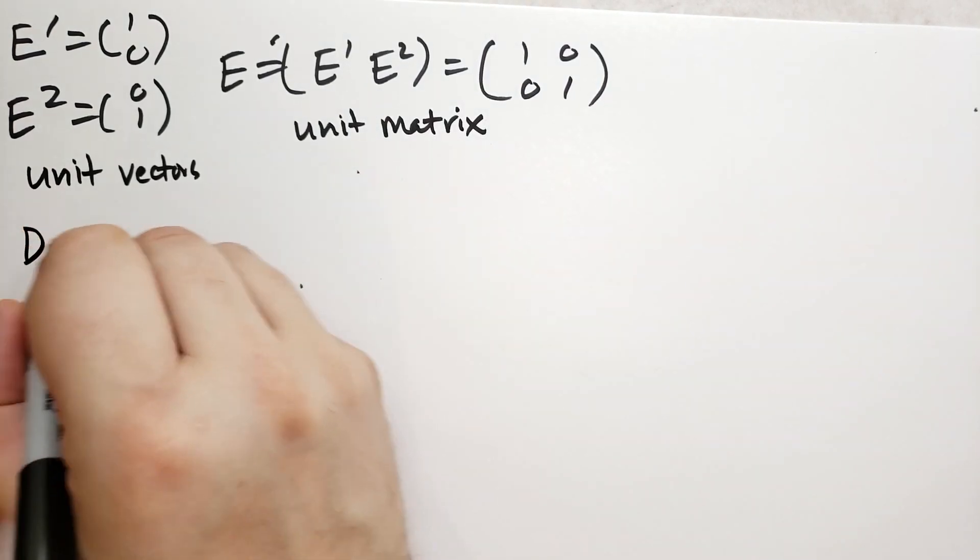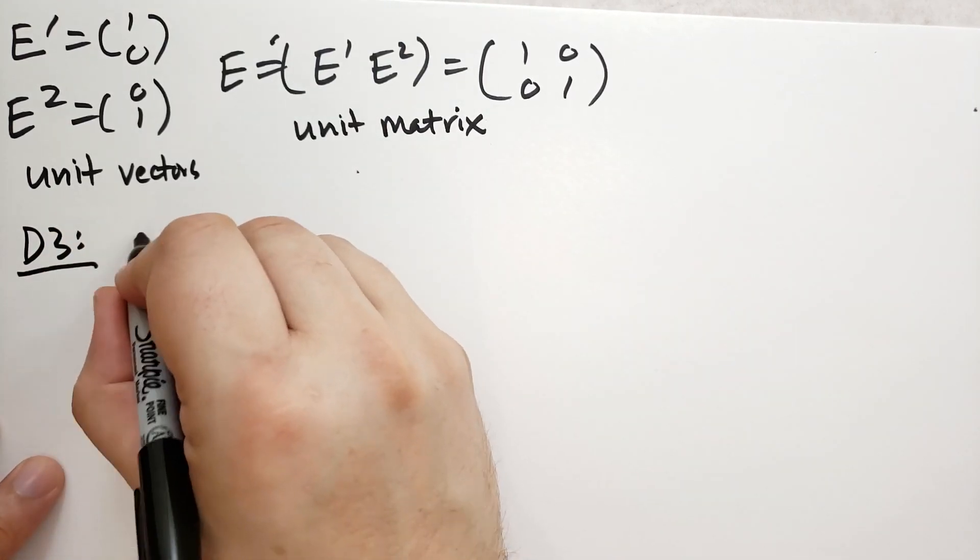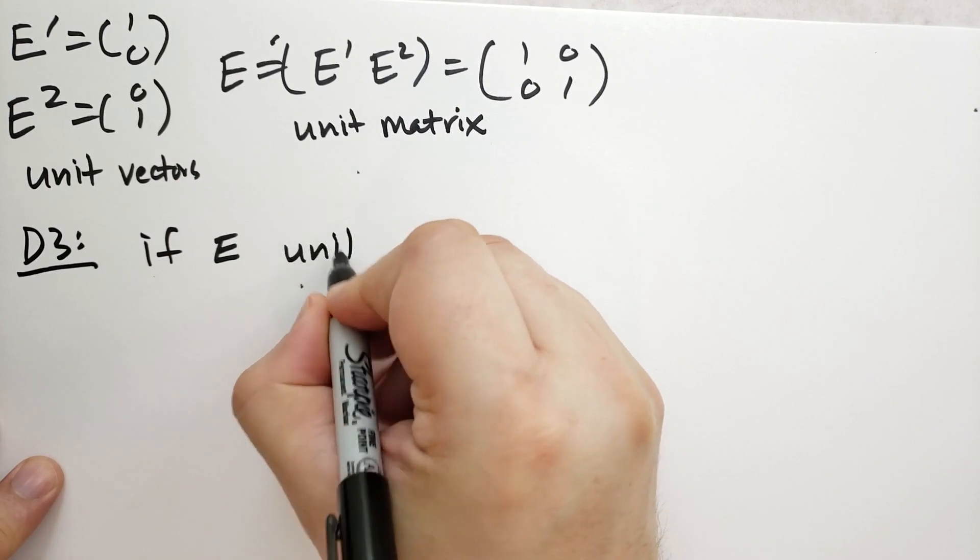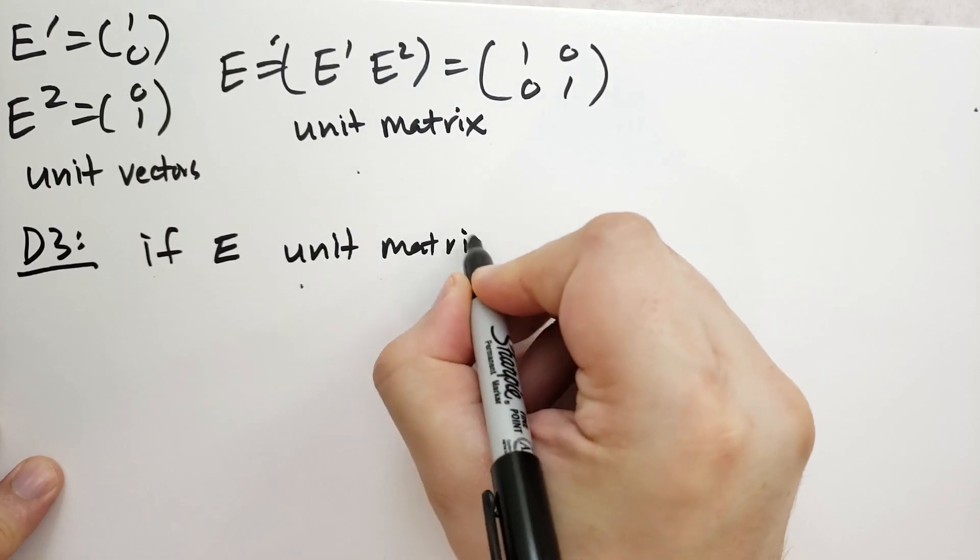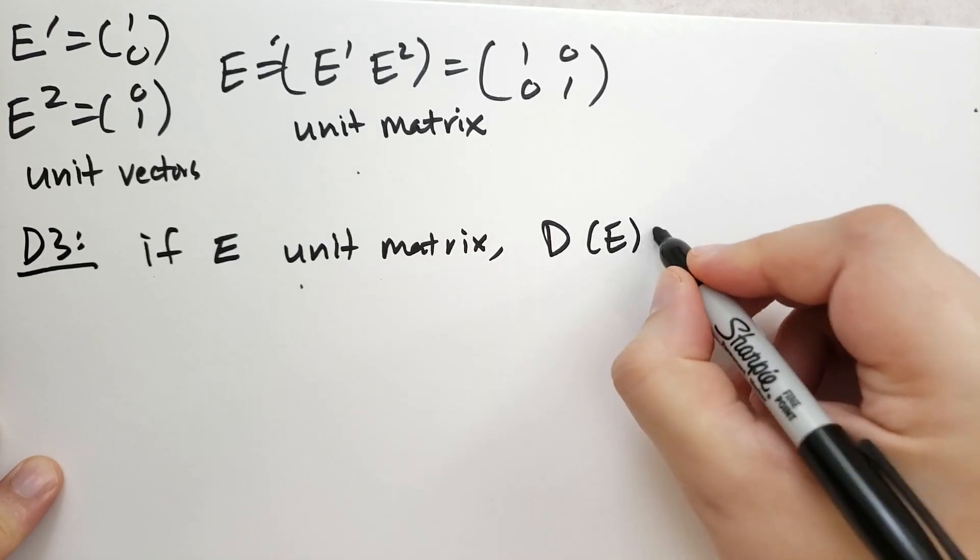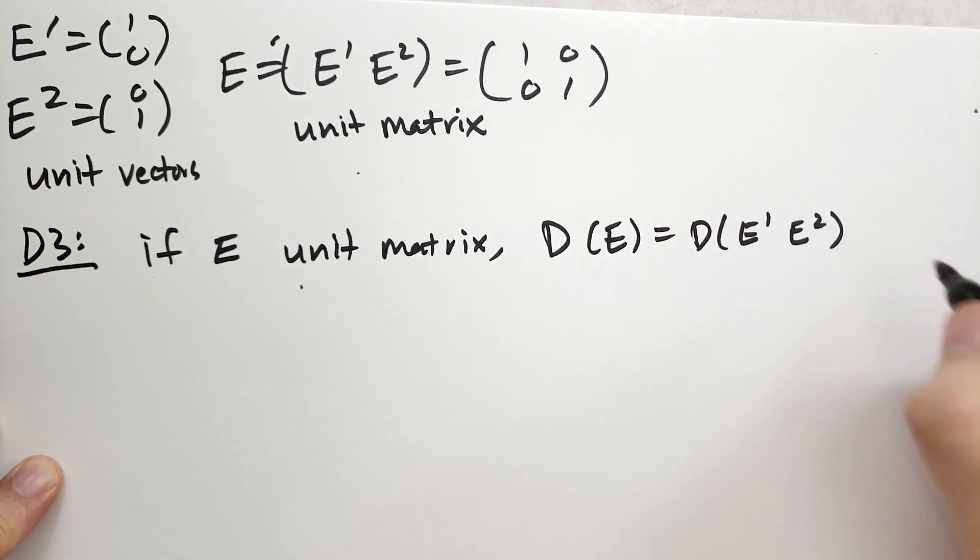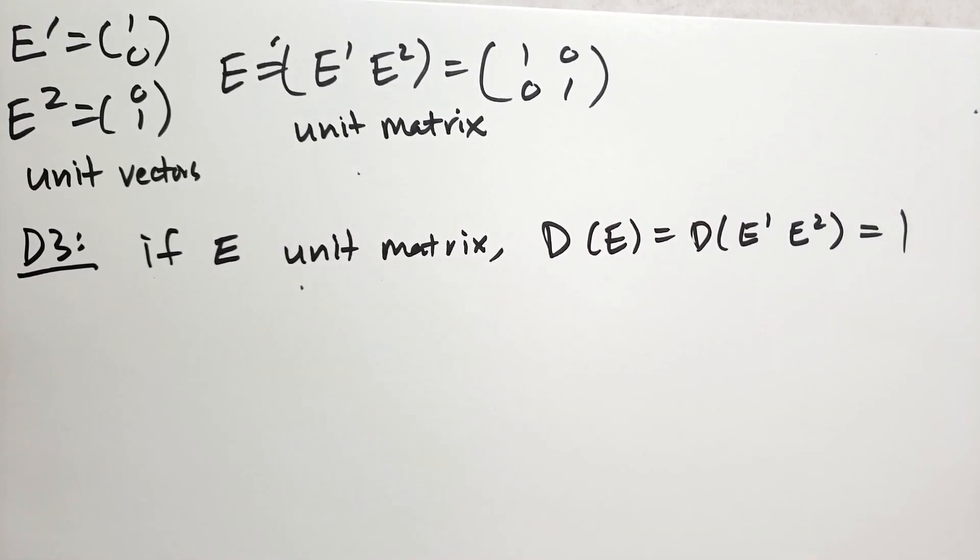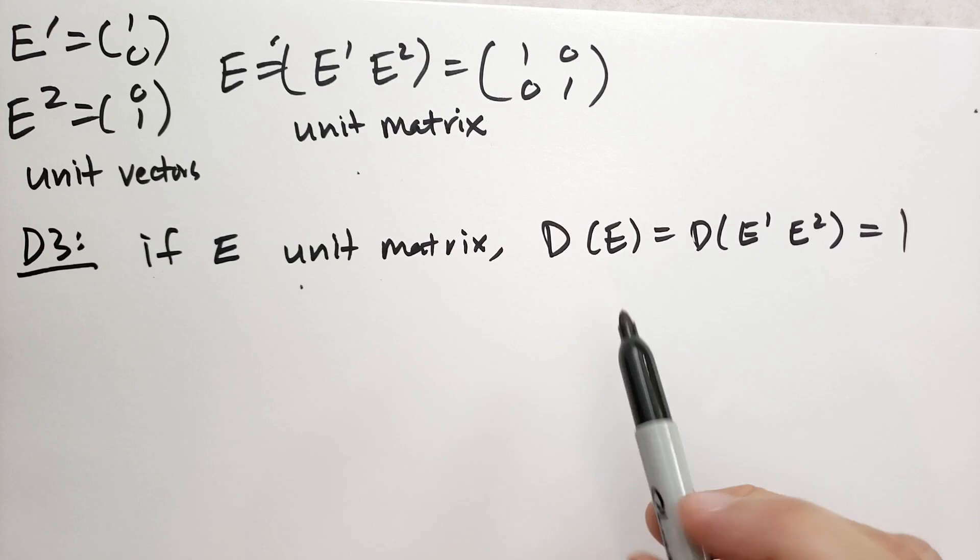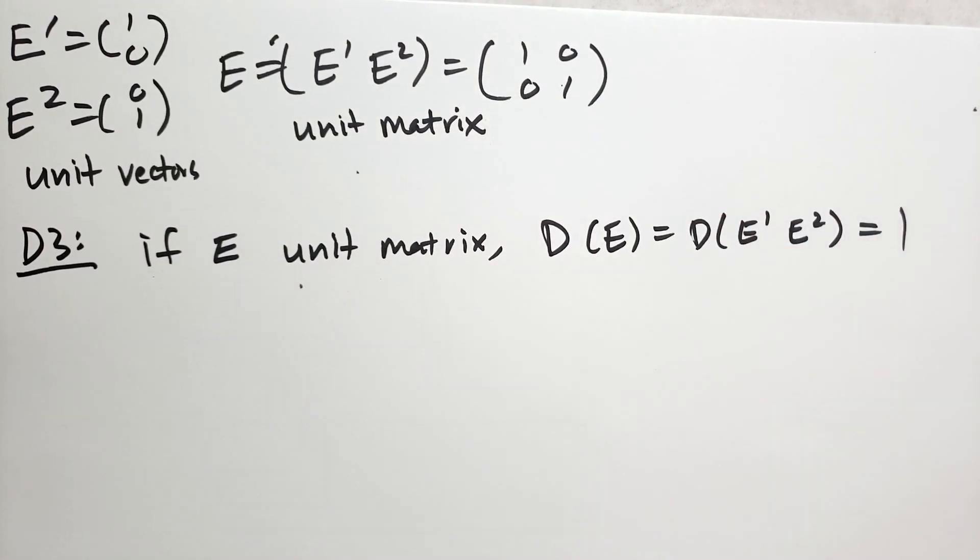So property D3 says that if E is the unit matrix, then the determinant of E, which is the same as the determinant of these two unit vectors, is equal to 1. That's pretty simple. I always like problems like this, where you just know something's 1. Why is that so? Well, it's just this column. This times that minus that times that, so that's pretty obvious.